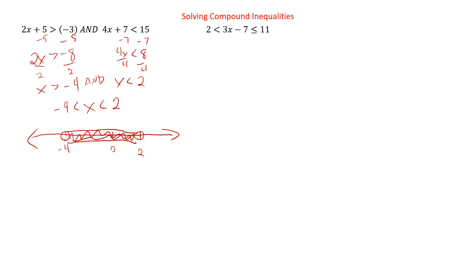Now, how about this kind of compound inequality? It doesn't have the AND written out, but we've turned it into this form. When you have something like this, the very first thing you need to do is split it up. So this means two is less than three x minus seven, AND three x minus seven is less than or equal to 11. So you split it up. Notice we take that whole middle part both times — we don't try to split the middle piece into the two pieces. The whole middle piece gets used twice.